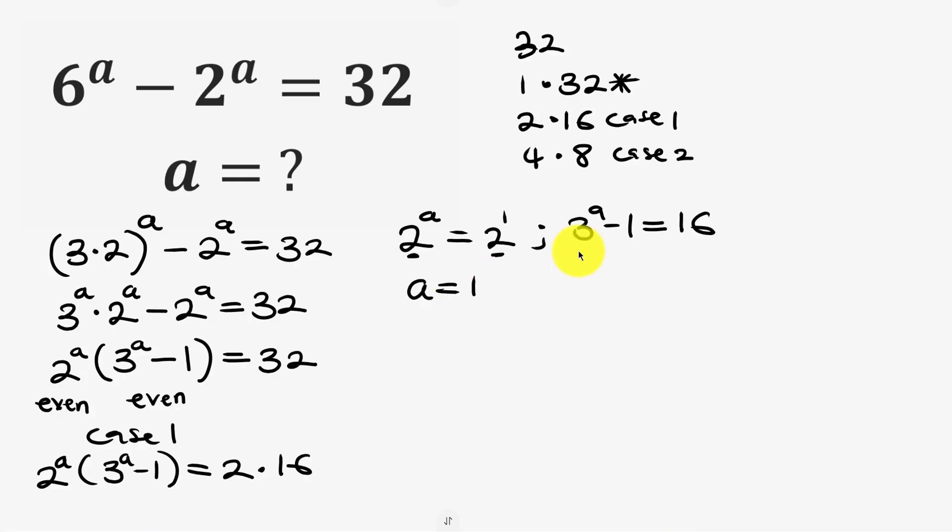Now let's try this in our second equation here. So if a is 1 we have 3 to power 1 minus 1 equal to 16. So 3 to power 1 is 3 minus 1 that would be 2 and we know that 2 is not equal to 16. So we're going to be rejecting this case.